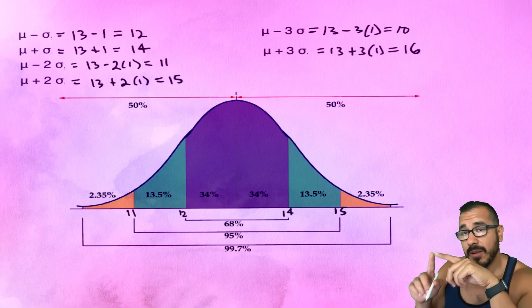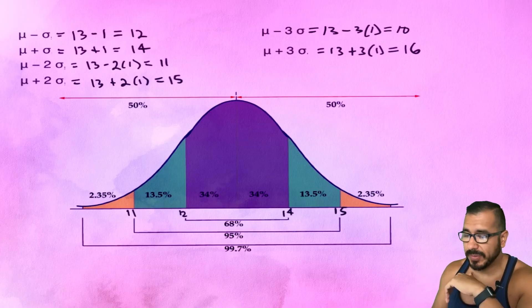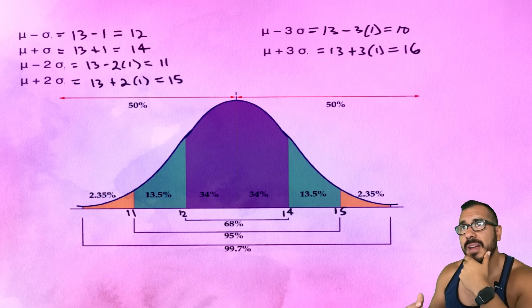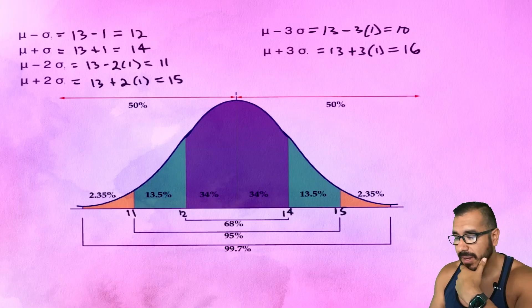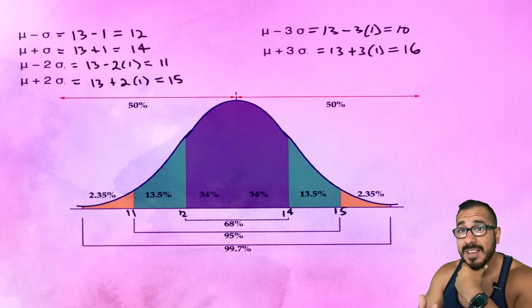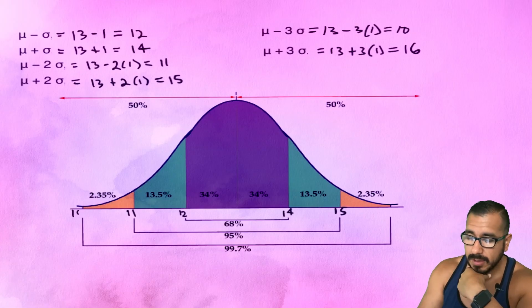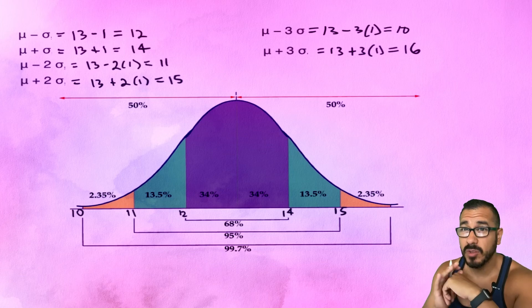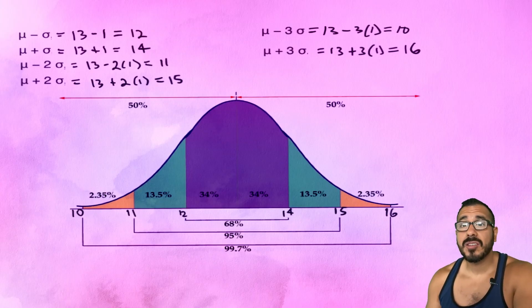When I go two standard deviations out, 95% of my data points fall between 11 and 15 percent. Always understand the context — if we were examining number of cars, we'd say 95% of data points fall between 11 and 15 cars. When I go three standard deviations out, 99.7% — basically all the data — falls between 10 and 16 percent.